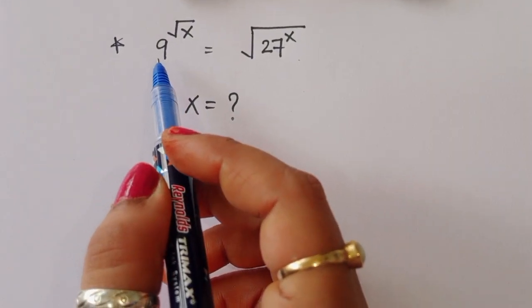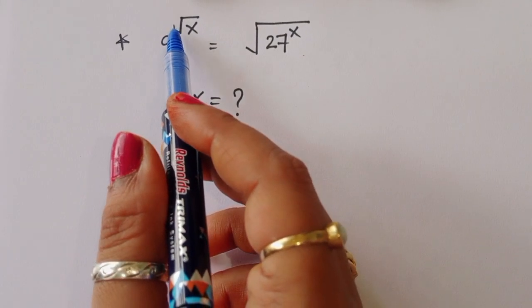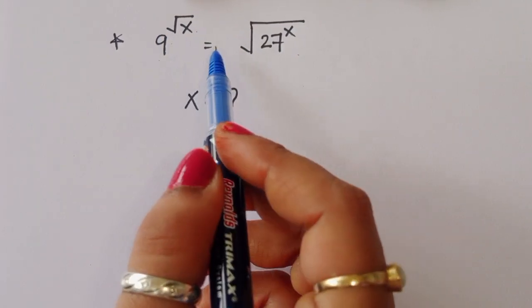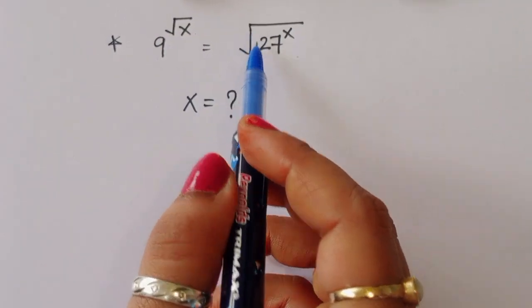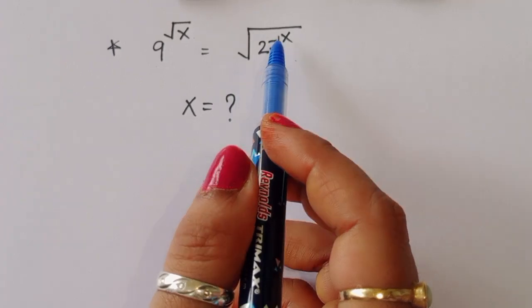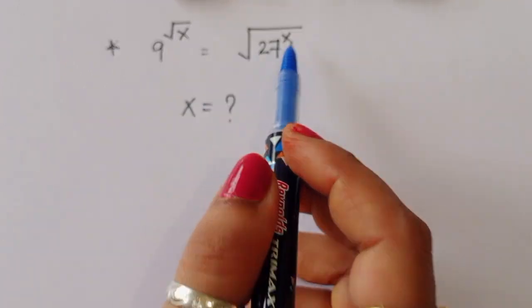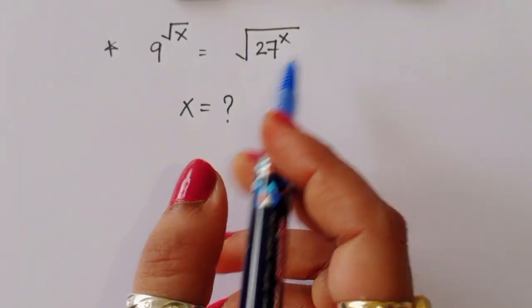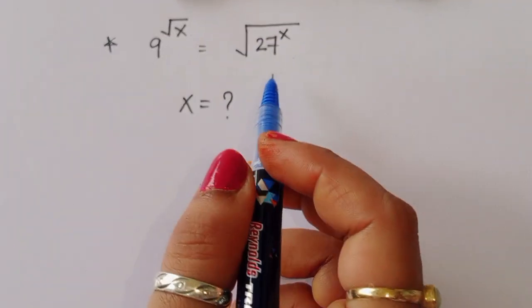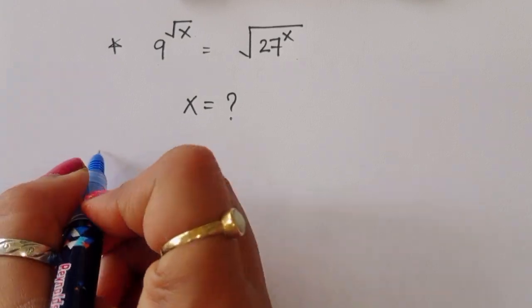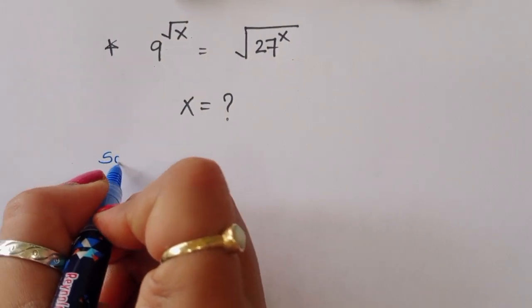The question is: given 9 to the power of root x is equal to square root of 27 to the power x, we have to find out the value of x. Let's look at the solution.